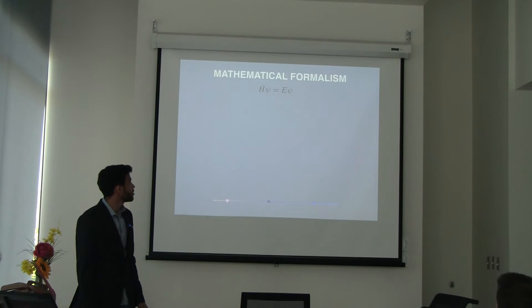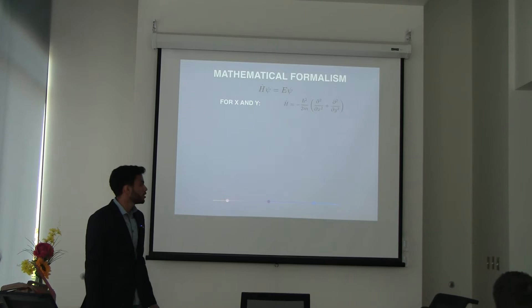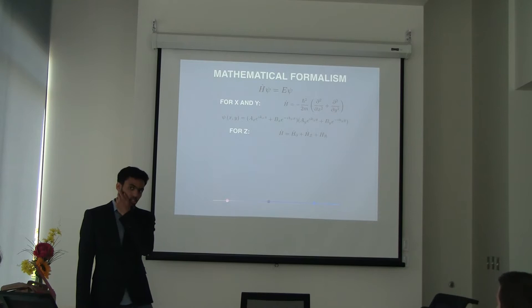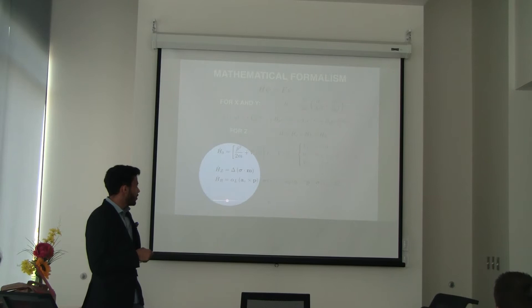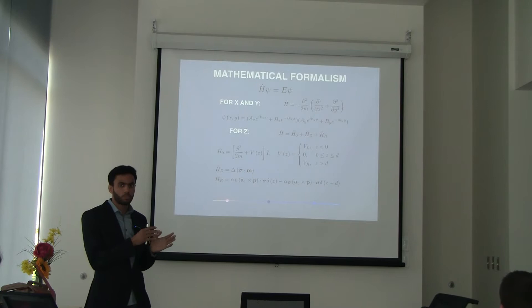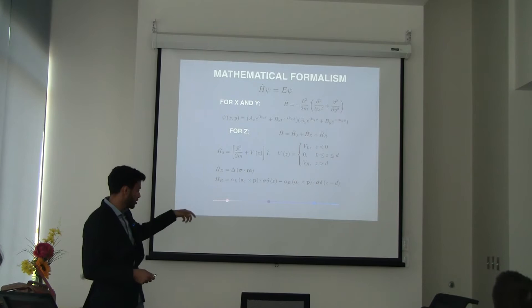The approach to solving a quantum well is straightforward. You start with the Schrödinger equation. The Hamiltonian for x and y is just the kinetic energy term, since the potential is constant everywhere, so the wave function is exponential. The real deal is with the z-axis. You can categorize the Hamiltonian into three terms: a basic term with kinetic energy and the barrier, another term related to magnetization — since the material in between is a ferromagnet, which associates different energies with different spins, giving a splitting represented by the Pauli matrix sigma — and a third term arising from spin-orbit coupling.